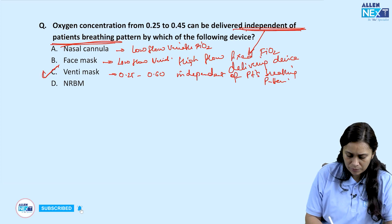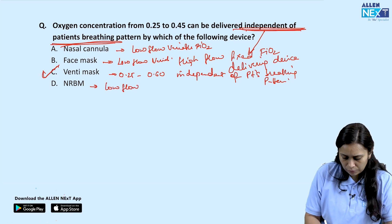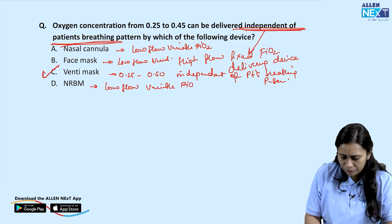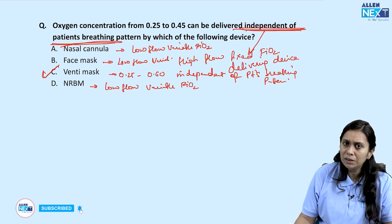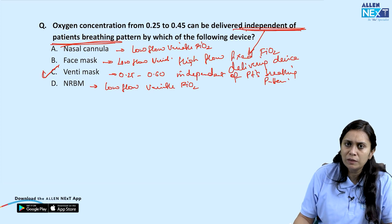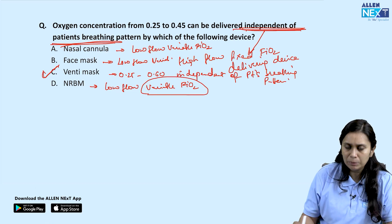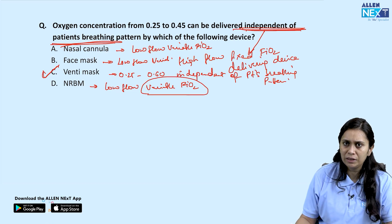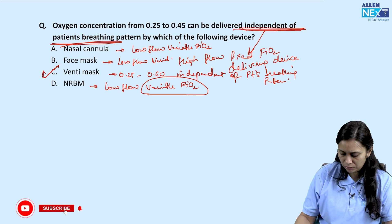A non-rebreather mask (NRB) is again a low-flow, variable FiO2 device. Though it can deliver a high FiO2 if the patient has a stable breathing pattern, the delivered FiO2 still depends upon the patient's breathing pattern — that is why it is called a variable FiO2 delivering device. So the answer is Venturi mask.